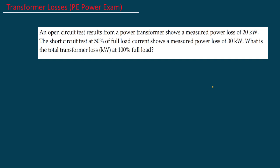Welcome back. Today we are solving a Power PE exam problem. This is a typical open circuit and short circuit transformer load losses calculation problem. We have an open circuit test result from a power transformer showing a power loss of 20 kW, and a short circuit test at 50% of full load showing a loss of 30 kW.